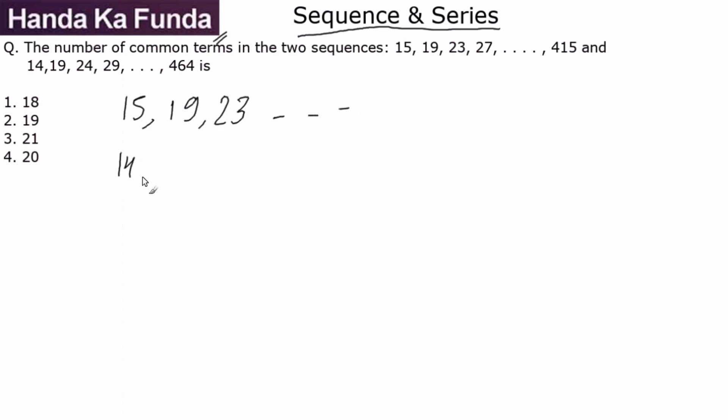The second series is 14, 19, 24, and so on. If you notice, the common difference here is 4 and the common difference here is 5, which means the terms which will be common to both of them will have a common difference of LCM of 4 and 5, which is 20.